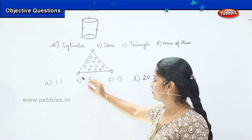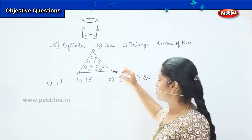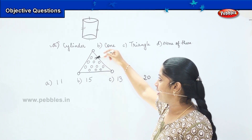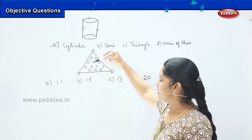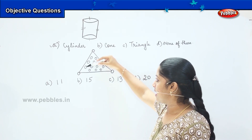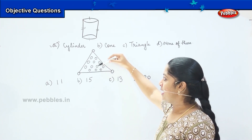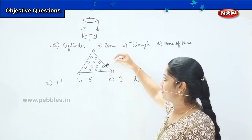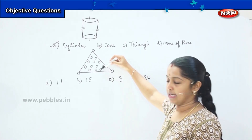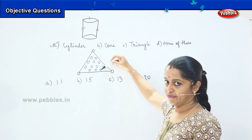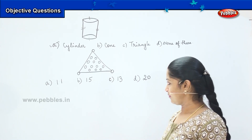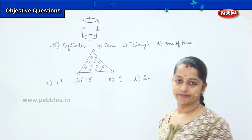1, 2, 3, 4, 5, 6, 7, 8, 9, 10, 11, 12, 13, 14, and 15. So how many circles are there? It is option B: 15.